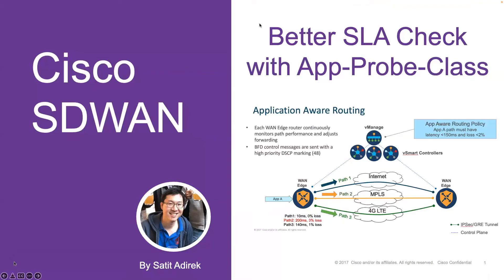In this video, we're going to talk about the better way to do application-aware routing using the SLA check with the application pro class. First we need to understand what it's about when we talk about SLA in application-aware routing.